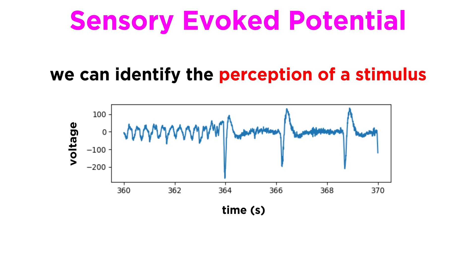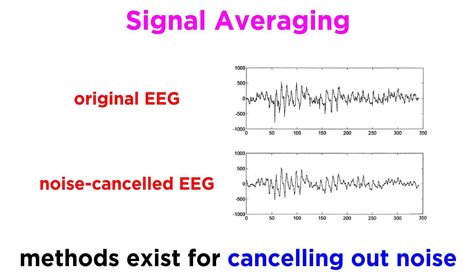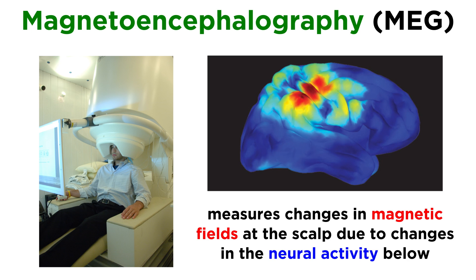With this technique, we can also identify the perception of a stimulus when it happens. This is called a sensory-evoked potential, and in this case, we can see the signal as being distinct from the background activity, which we call the noise. If the noise is too great, it becomes more difficult to distinguish such sensory-evoked potentials from the noise. Methods such as signal averaging work to reduce noise by recording noise in absence of stimulus and mathematically removing it when the stimulus is present. Other similar techniques also exist, like magnetoencephalography, or MEG, which measures changes in magnetic fields at the scalp due to changes in neural activity below.